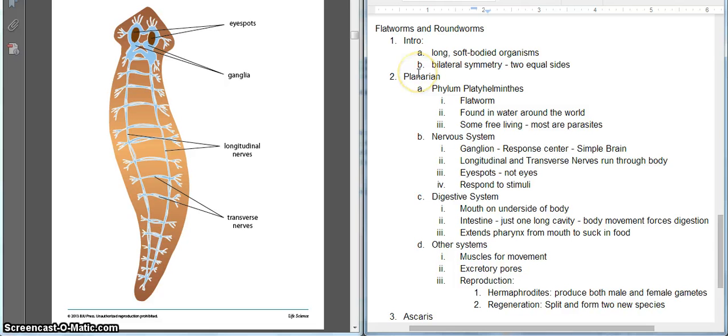They are long, soft-bodied organisms. They really range in length depending on which species we are looking at, anything from a fraction of an inch all the way up to several inches long. They do exhibit bilateral symmetry. This is the first time we've seen this word, bilateral.